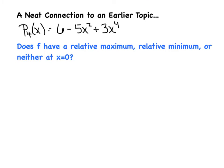Our next example uses the same Taylor polynomial P sub 4 of X — same terms — but I'm going to show you a neat connection to an earlier topic. The first time I saw this question on an AP exam I was really impressed, and it instantly became one of my favorites. The question is: does this particular F have a relative max, a relative min, or neither at X equals zero?